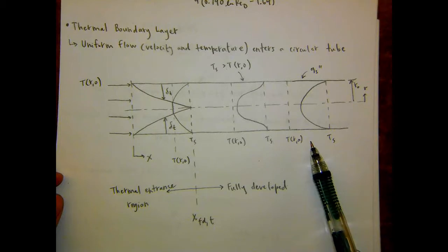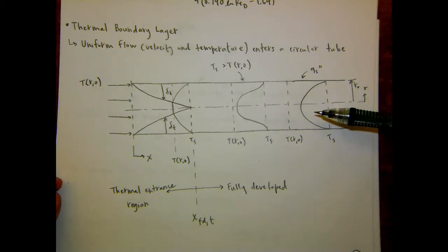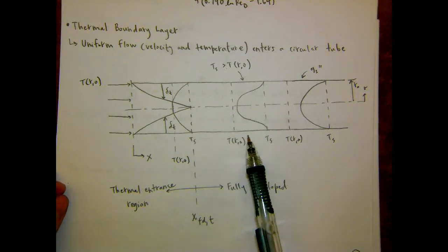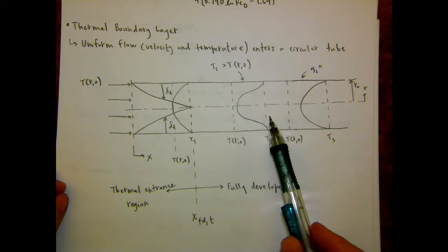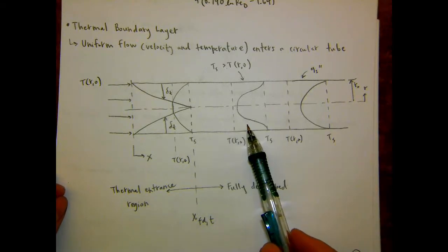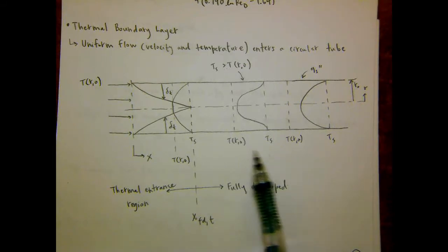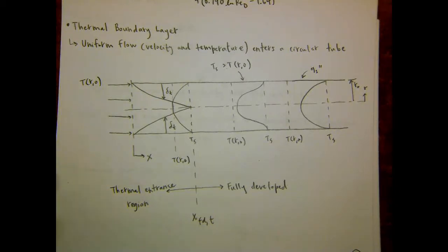We also said that because you're basically continually heating or cooling a finite amount of fluid, for internal flow, you have to think about the fact that the mean temperature of the fluid continues to change as you move downstream. So if you have a surface temperature that's higher than the fluid temperature, you're actually continually heating the flow. So unlike the velocity boundary layer, which once you reach the fully developed position the profile does not change, the temperature profile continues to change downstream. So today we'll talk about how we can define this as being fully developed, even though the temperature profile continues to change.